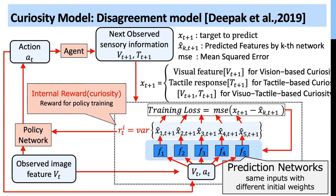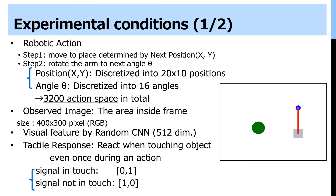This is a schematic of the disagreement model for curiosity. The key point of the model is the reward, which is defined by the variance of the predictions of multiple prediction networks. The prediction networks receive the same input, but training starts with different initial weights, so the variance of predictions gradually decreases for frequently experienced inputs. In our experiment, the input is visual information and action, and we change the output to compare different curiosity sensations.